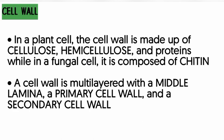The cell wall is only found in plant cells. It is made up of cellulose, hemicellulose, and proteins in plants. In fungi, cells also have a cell wall, but their cell wall is made up of chitin, not cellulose. The cell wall has three layers: the middle lamella, the primary cell wall, and the secondary cell wall. The middle lamella is found in between the primary and secondary cell wall.